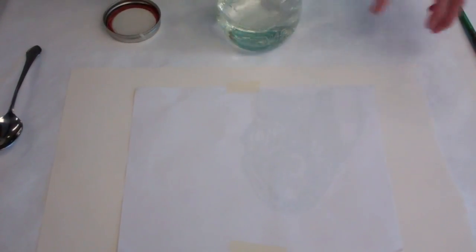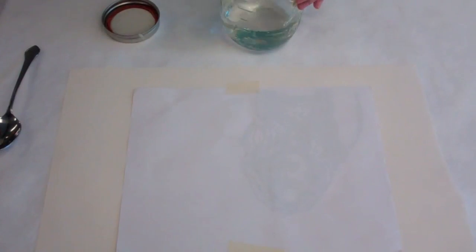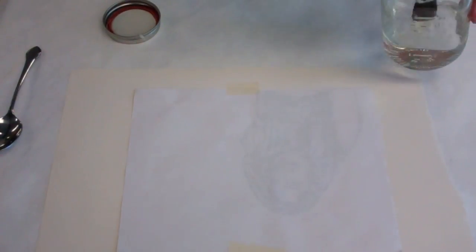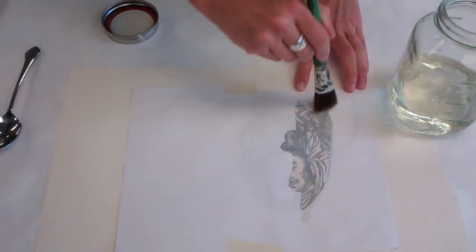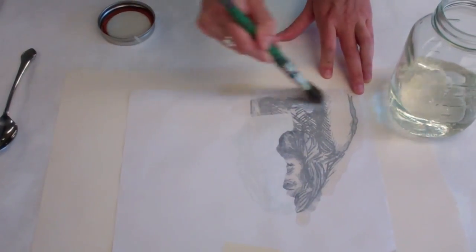Take your acetone and your paintbrush, and you are going to paint the acetone onto the back of your image like so.